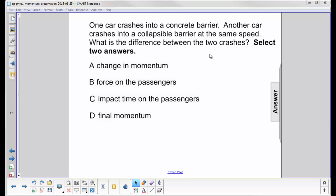What's the difference between the two crashes? Select two answers. The final momentum in both cases is zero. You've come to a stop. Your initial momentum was the same because both cars were moving at the same speed. So if you come to zero for a final momentum, your change in momentum is the same.